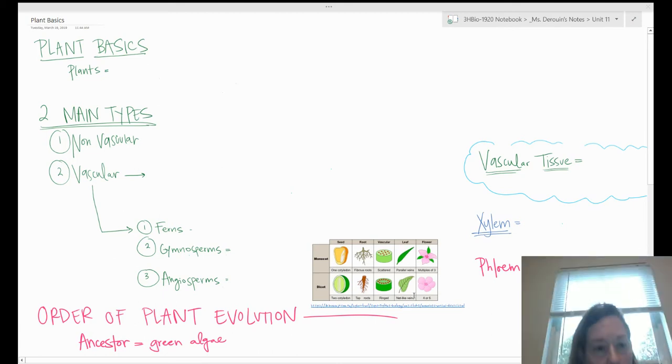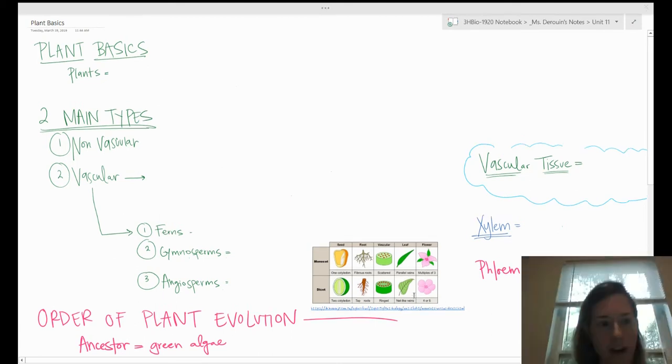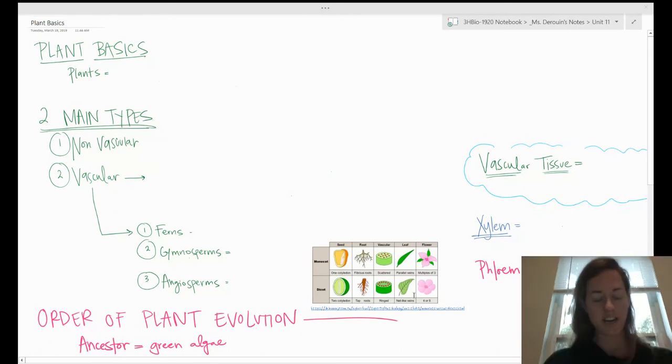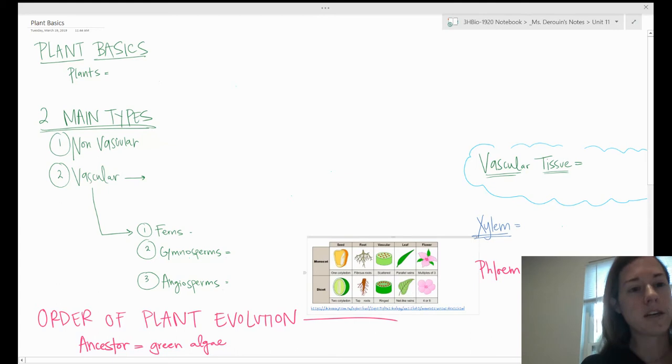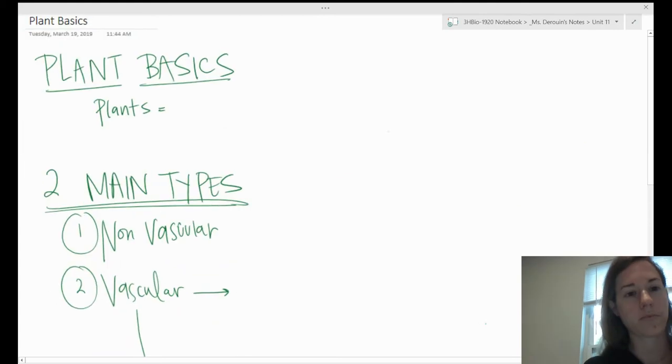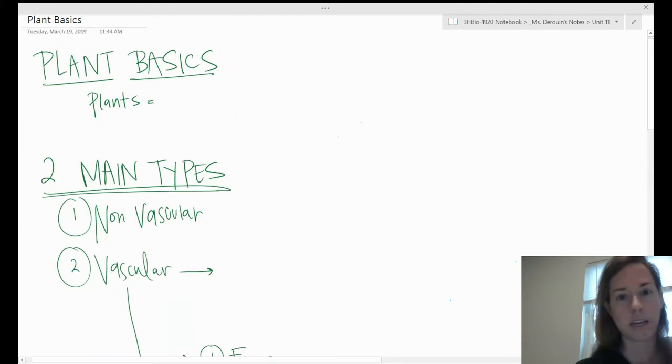Okay, hi everyone, welcome to our digital learning adventure. Today we're going to start our plant unit and we're just going to do a little bit of info about plant basics and kind of an overview of different types of plants and when they evolved. We'll start with just an overview of what it means to be a plant.